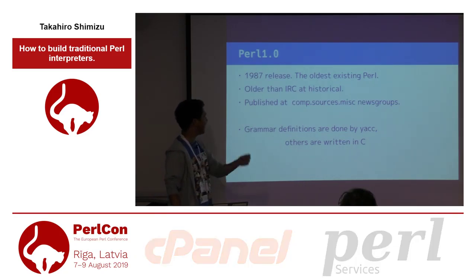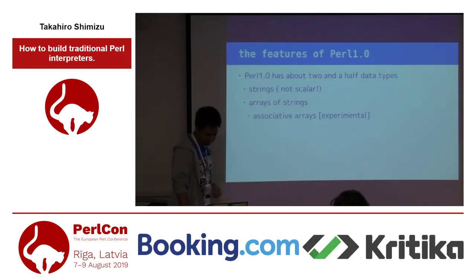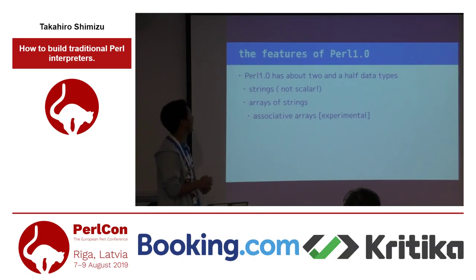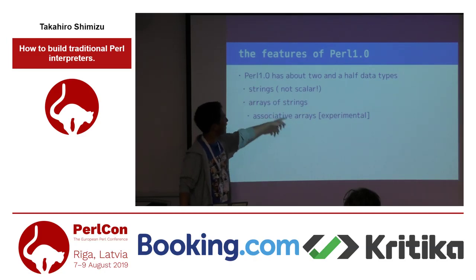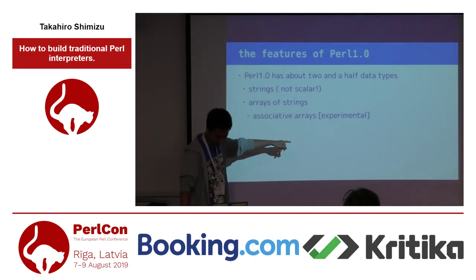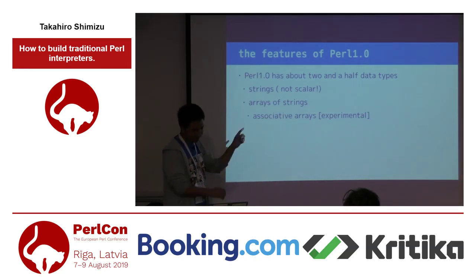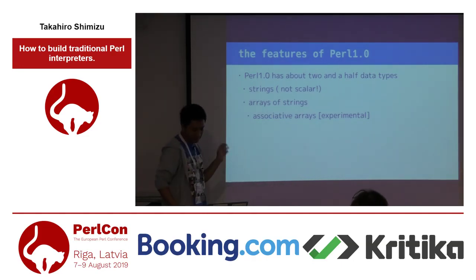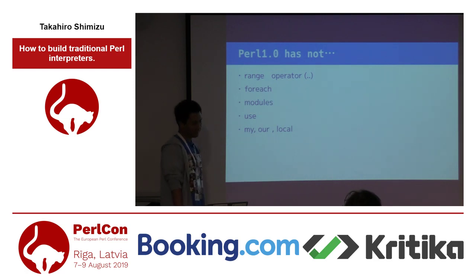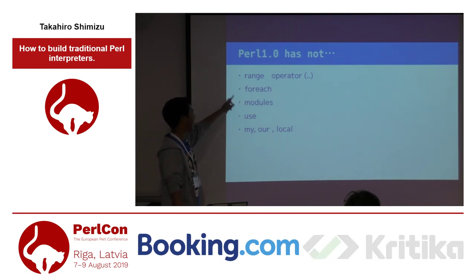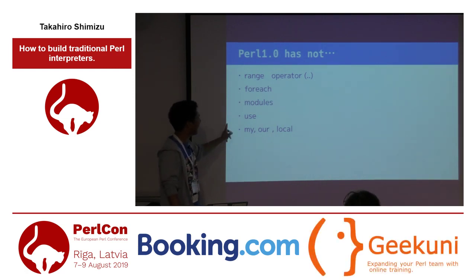The grammar and parser are defined in yacc, and the rest is written in C. Perl 1.0 has two and a half data types: string (scalar), array of string, and associative array — which is experimental. In Perl 1.0, the associative array is not a hash. You can add keys and values but cannot delete them — only add. Perl 1.0 does not have the range operator, foreach, module, use, defined, or local.